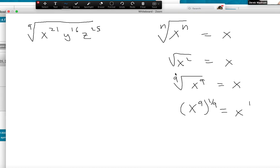So whatever this index is, for that many, that means one is going to come out. So in this case, when I have a group of nine, that's going to represent one coming out of the radical.